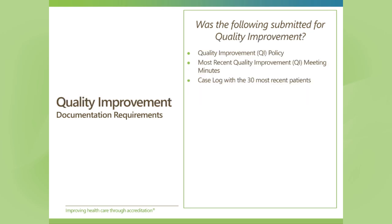The three things we ask for with the application are: your quality improvement policy — we have a sample document on our website outlining what needs to be included — the most recent quality improvement meeting minutes, and of course the application itself when you're ready to submit.